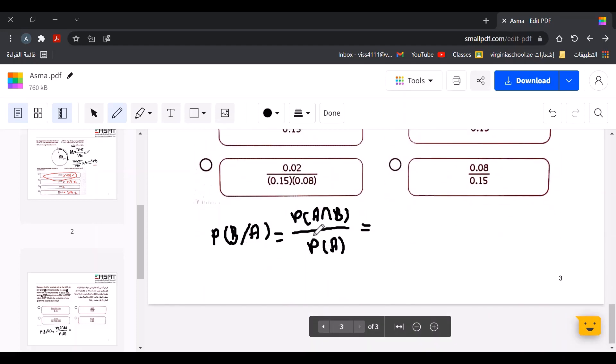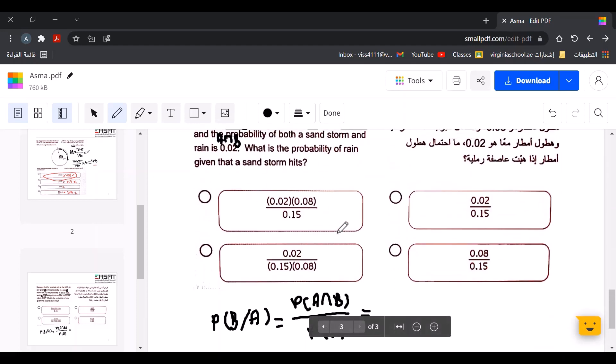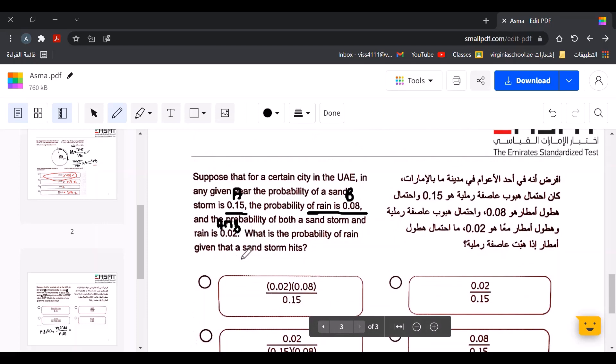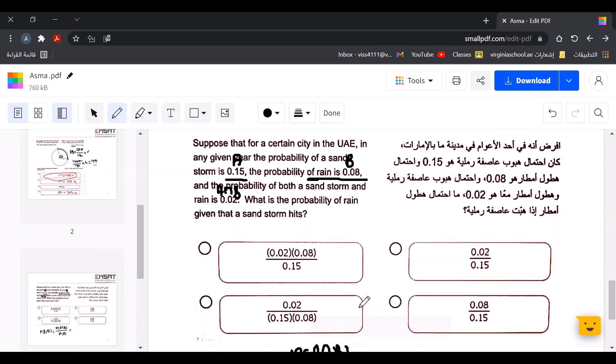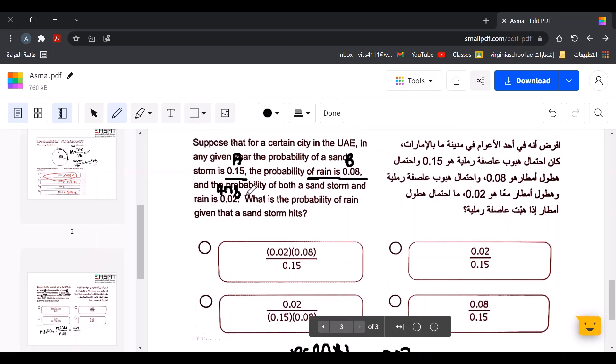Here we need the probability of A and B. The probability of A and B is 0.02, so 0.02, and the probability of A is 0.15.